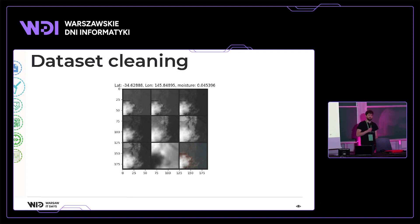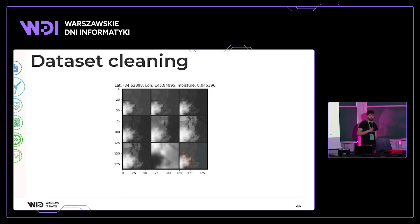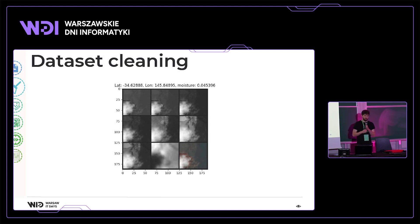We also filter based on soil moisture quality using flags provided by the soil moisture network, and we look for outliers to filter them out. Since Landsat works in visual light and infrared, we only take images captured during daytime — we don't want images taken at night.